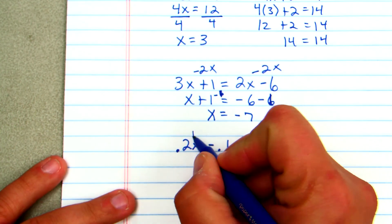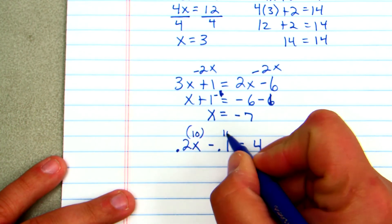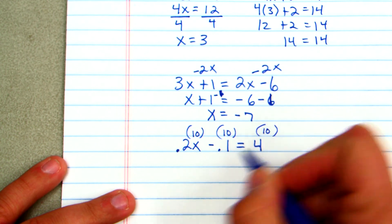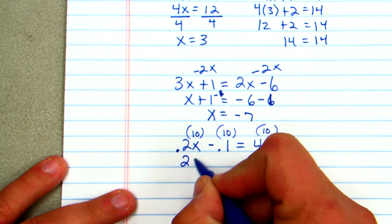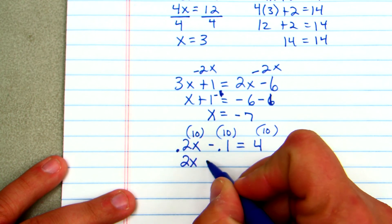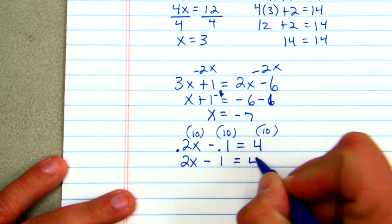So I'd multiply every term in there by 10 to eliminate the decimal. I can't leave the 4 out either. So by doing that, that would give me 2x. That would give me minus 1 equals 40.